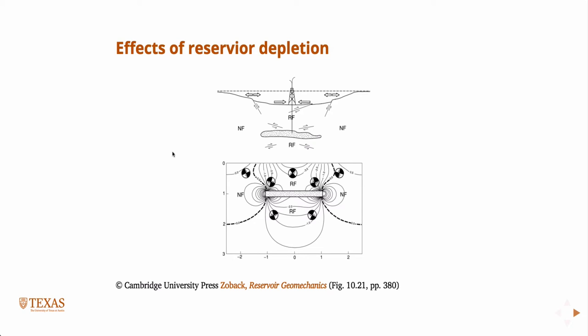This first picture is just sort of a cartoon, and there are some assumptions here, so it's not all that useful for solving problems, but it just gives you a picture of how stress can change and how much it can change in a reservoir under some idealized assumptions. In this case, the assumptions are that you have a very rectangular reservoir embedded in a homogeneous, isotropic, elastic earth.